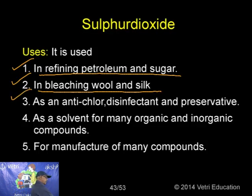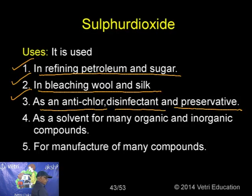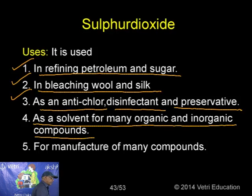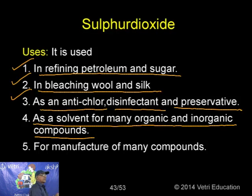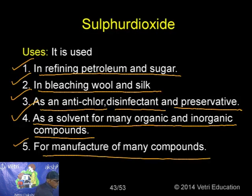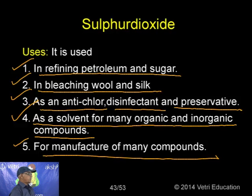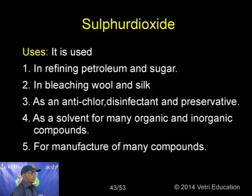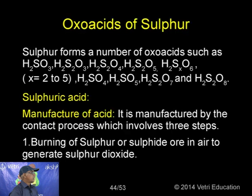Commercial preparation of SO₂: it is produced as a byproduct during roasting of sulphide ores. For example, four moles of FeS₂ reacts with 11 moles of O₂ to give iron oxide and SO₂, which can be collected.